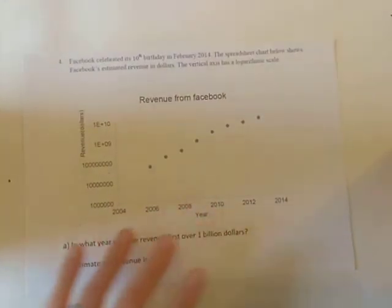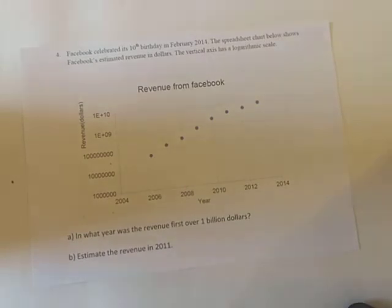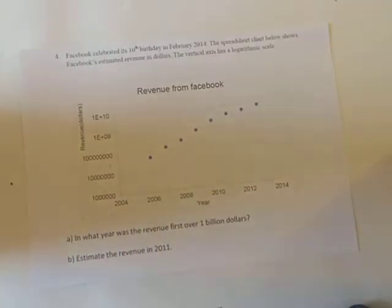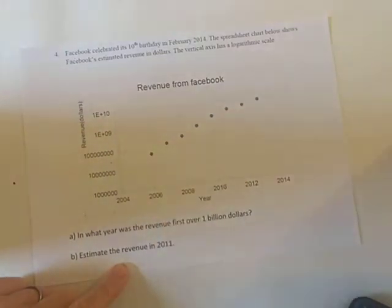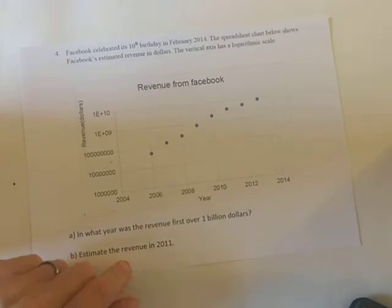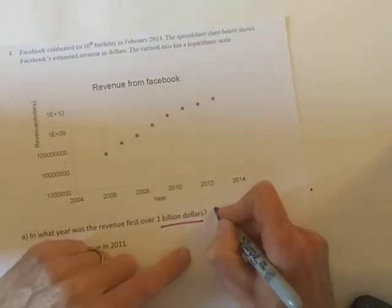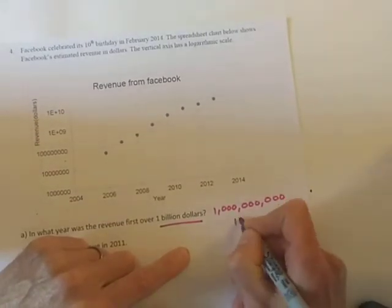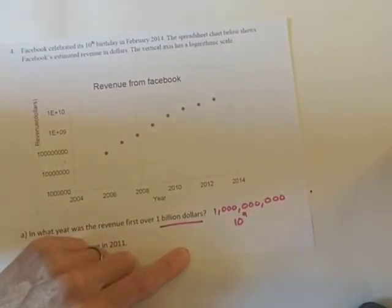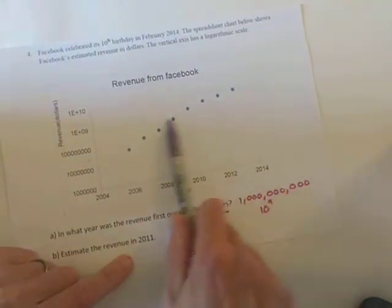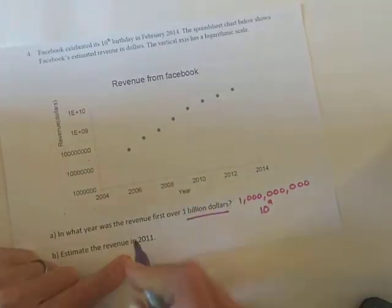For question four we've got revenue from Facebook, with the year on a linear scale and revenue on a logarithmic scale, going up by a power of 10 each time. In what year was the revenue first over a billion dollars? A billion dollars is a thousand million, or 10 to the power of 9. Once you've got that, you can see this is the line representing a billion dollars, and the first time it surpassed it was in 2010.